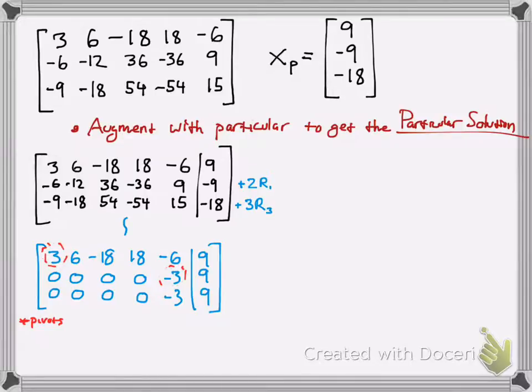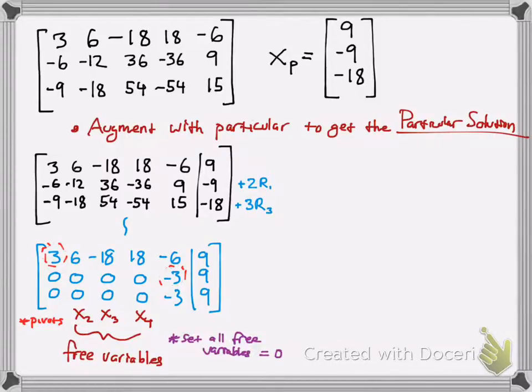Then I just circled the pivots in red slightly. But the next thing you want to do, you can actually just look at the free variables here, which are x2, x3, and x4, because notice how the free variables are located after the pivots. And so we take a look at those free variables and you set them all equal to 0.